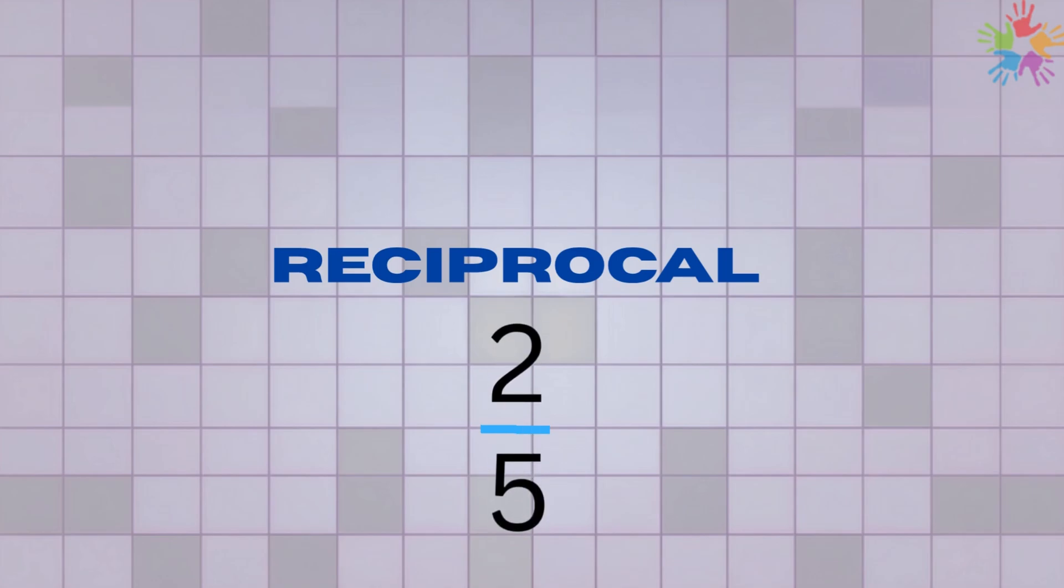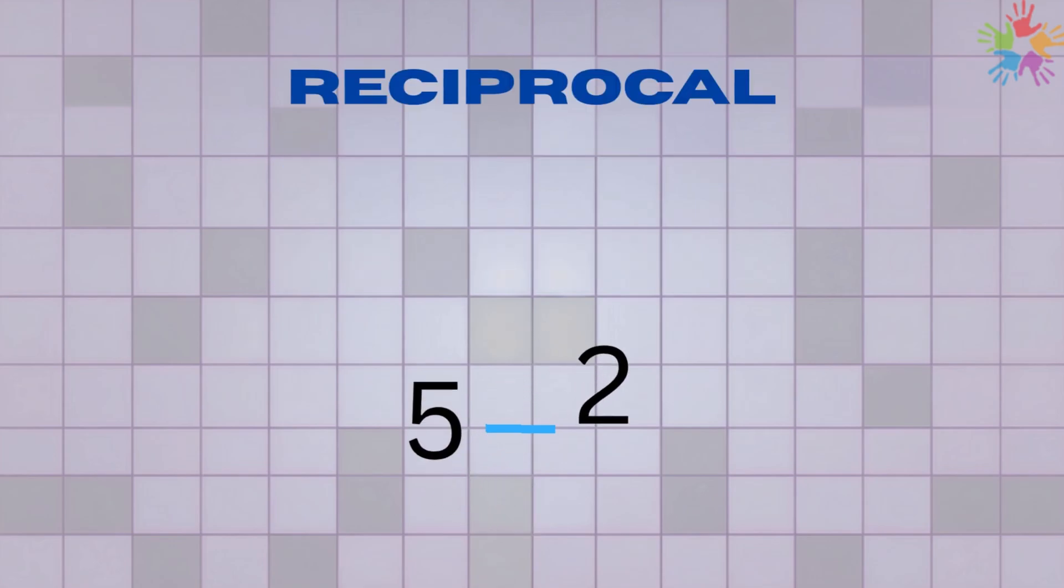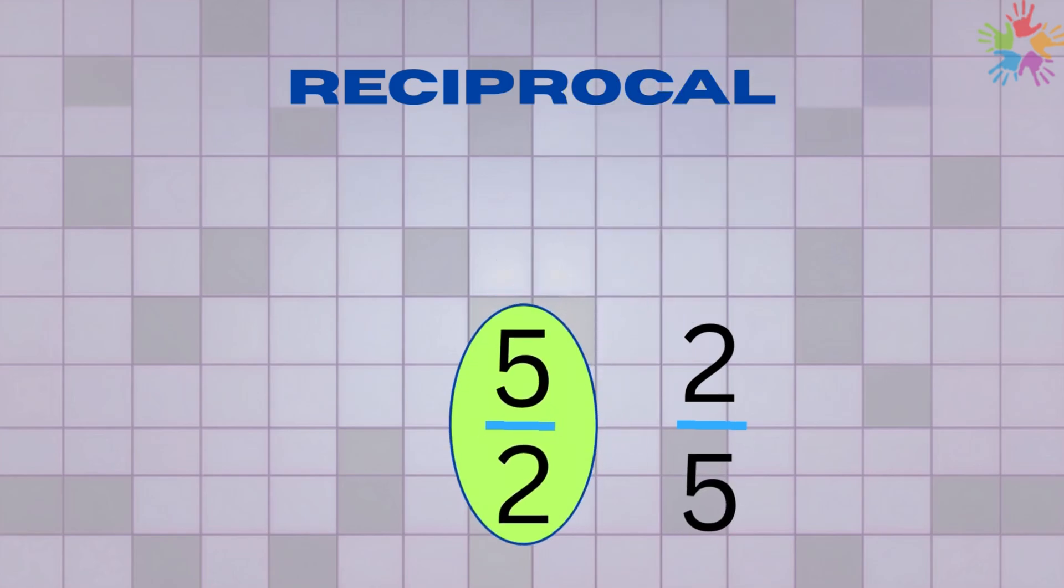For example, if you have the fraction 2 over 5 and you switch the top and bottom numbers, you'll end up with 5 over 2. 2 over 5 is the reciprocal of 5 over 2, and 5 over 2 is the reciprocal of 2 over 5.